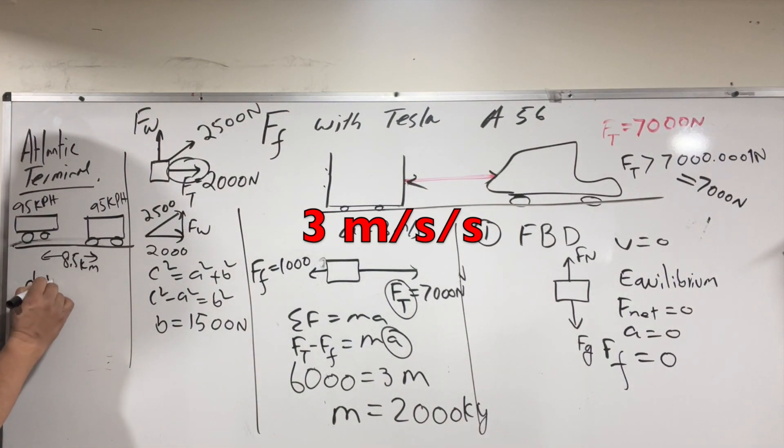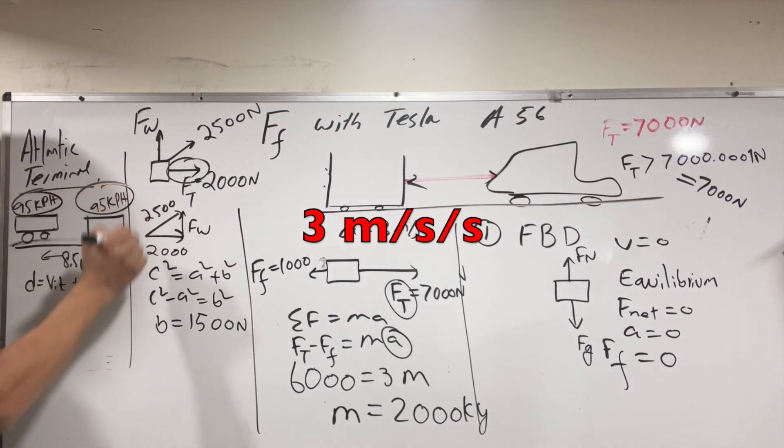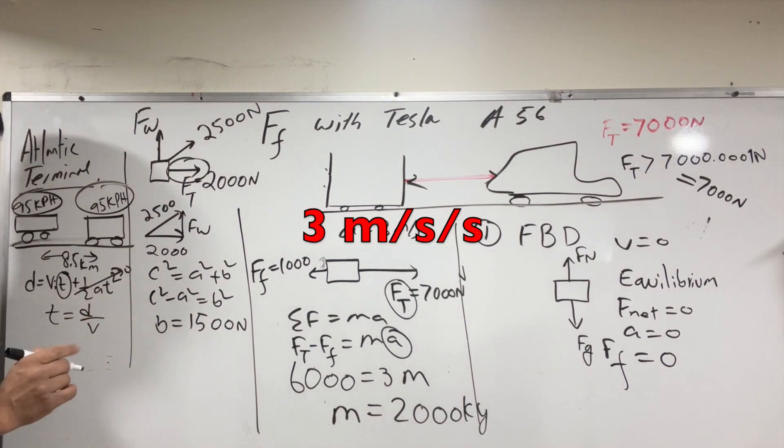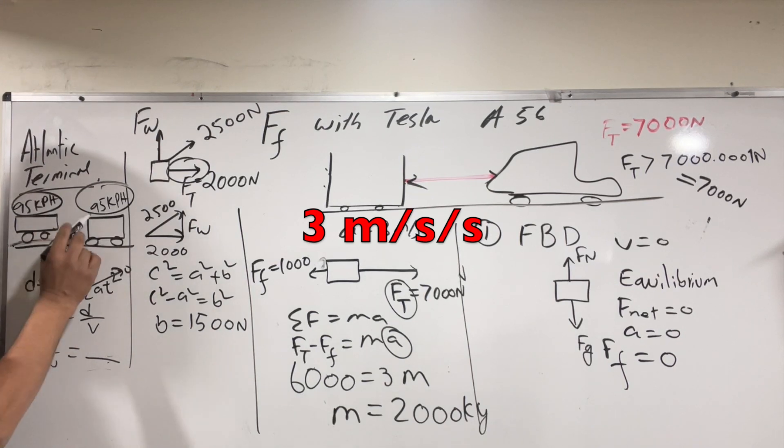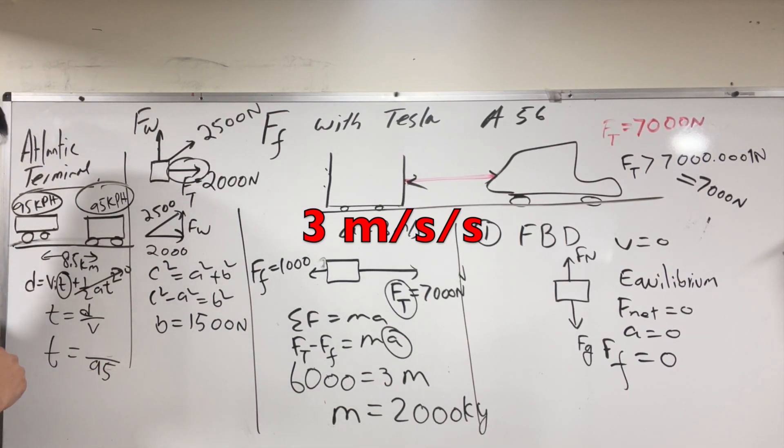What do you know? Distance is equal to Vi*t plus half a*t squared. They are moving with constant velocity, 95 kilometers per hour, so then t is equal to d over v. Now v is obvious, v is 95. For d we have two options: putting 8.5 over here, or we can put 4.25 divided by 95. This case you're probably gonna get, I don't know, and this case 0.04 or 0.08, which one is correct?